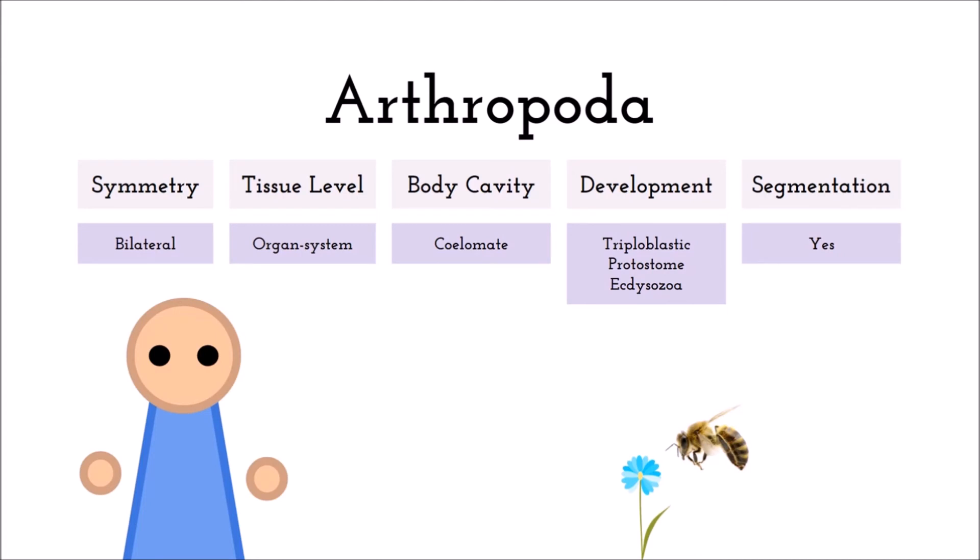Arthropods are bilateral, organ-system-level coelomates that are triploblastic protostomes, but are also ecdysozoan, which means that they molt.